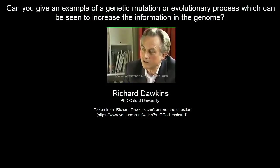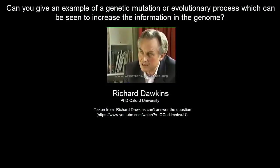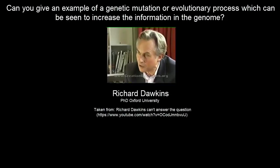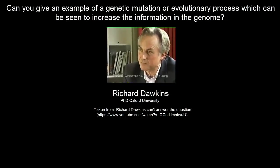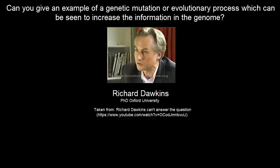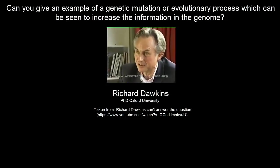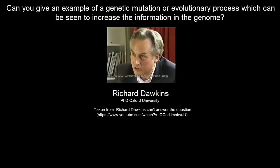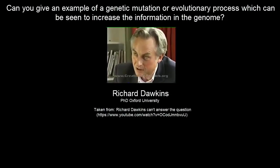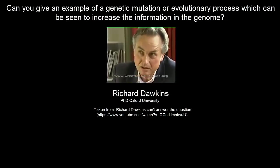Quite a lot of the misunderstanding of evolution stems from the fact that people are looking at modern animals and thinking that Darwin said we're descended from them. Well, we're not. We're not descended from modern fish. We're not descended from modern monkeys. We're not descended from modern apes. They are modern animals just as we are. They are our cousins. They are not our ancestors.